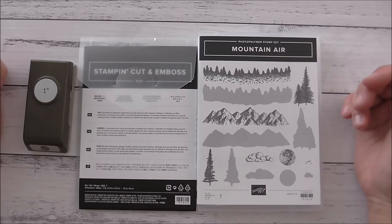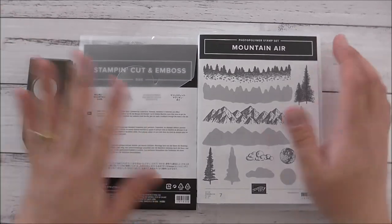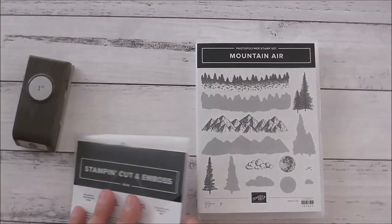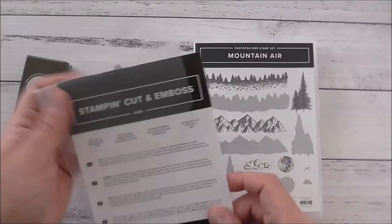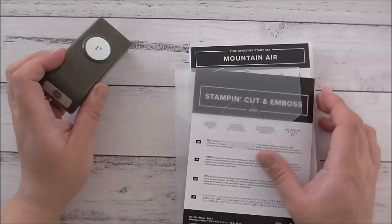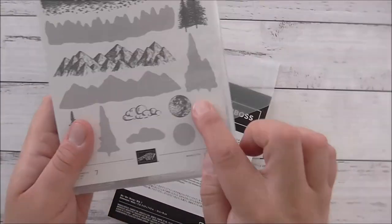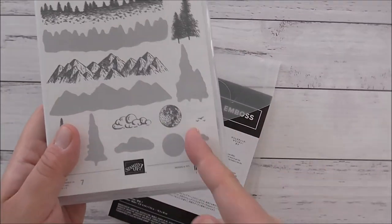Today I'm going to be making a card using the mountain air bundle. You can find this in the new mini catalog, and I'll be using the matching dies with this and a one-inch circle punch, which is what you need to cut out the sun or the moon image.